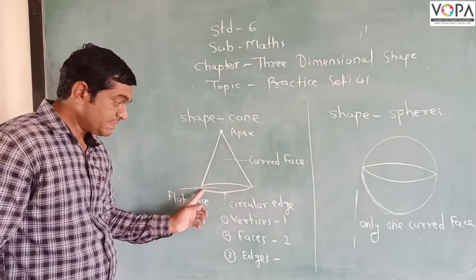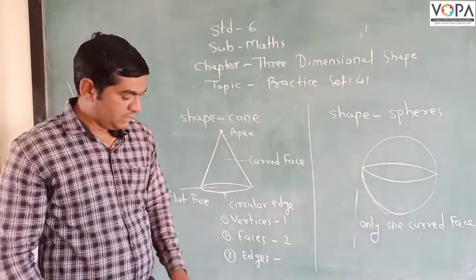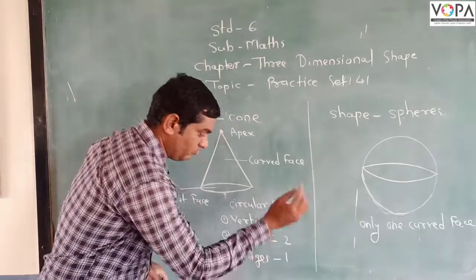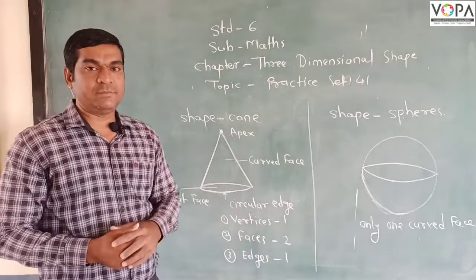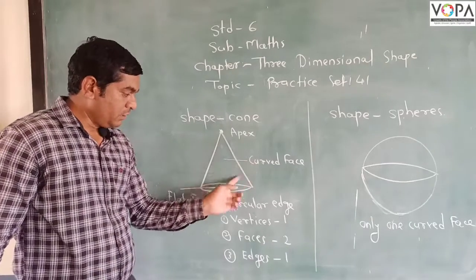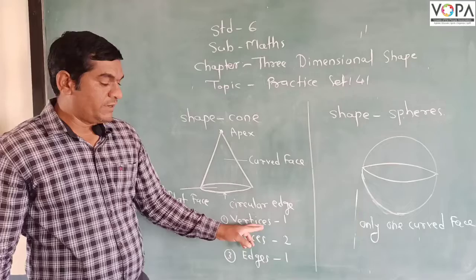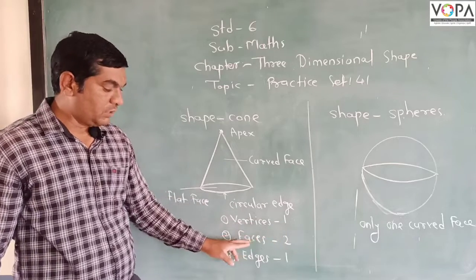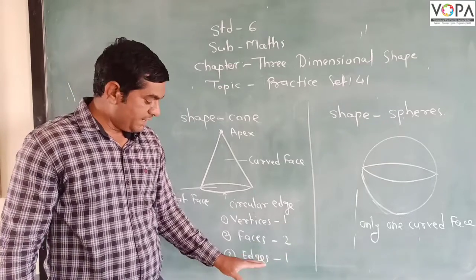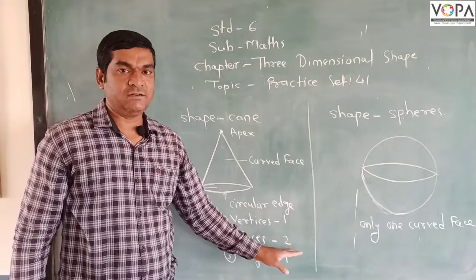And edges, only this is the circular edge. So it is only one. So from that above information, we get the whole number of the cone there. Then in cone, the number of vertices are one, number of faces are two, and the number of edges are one.